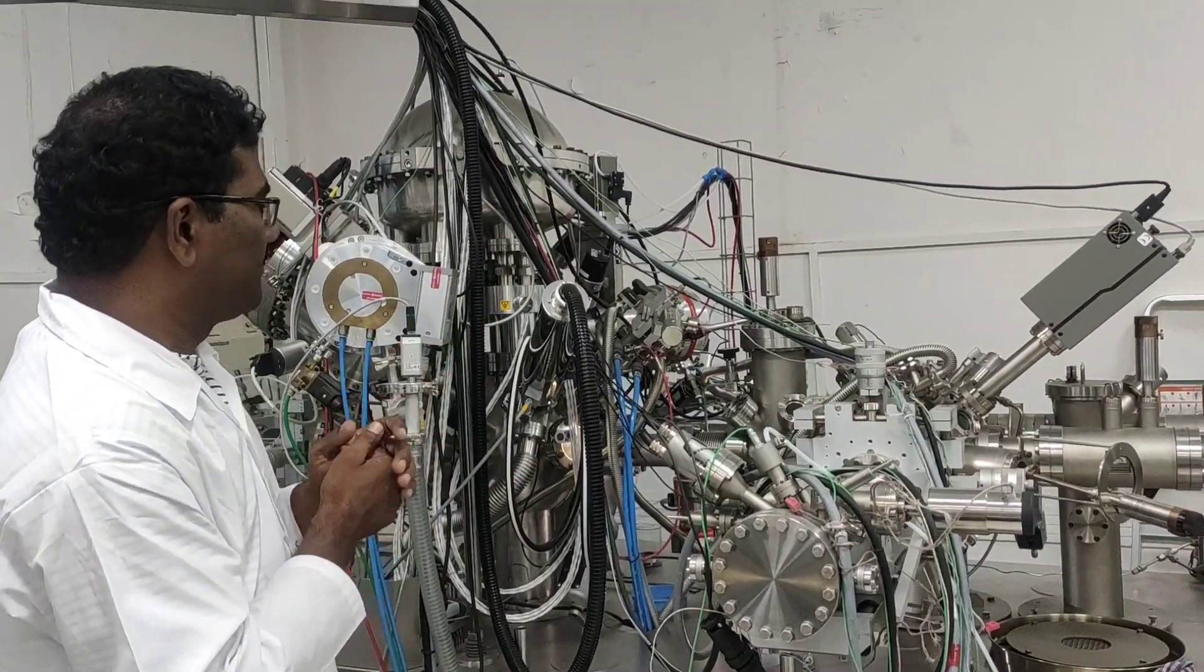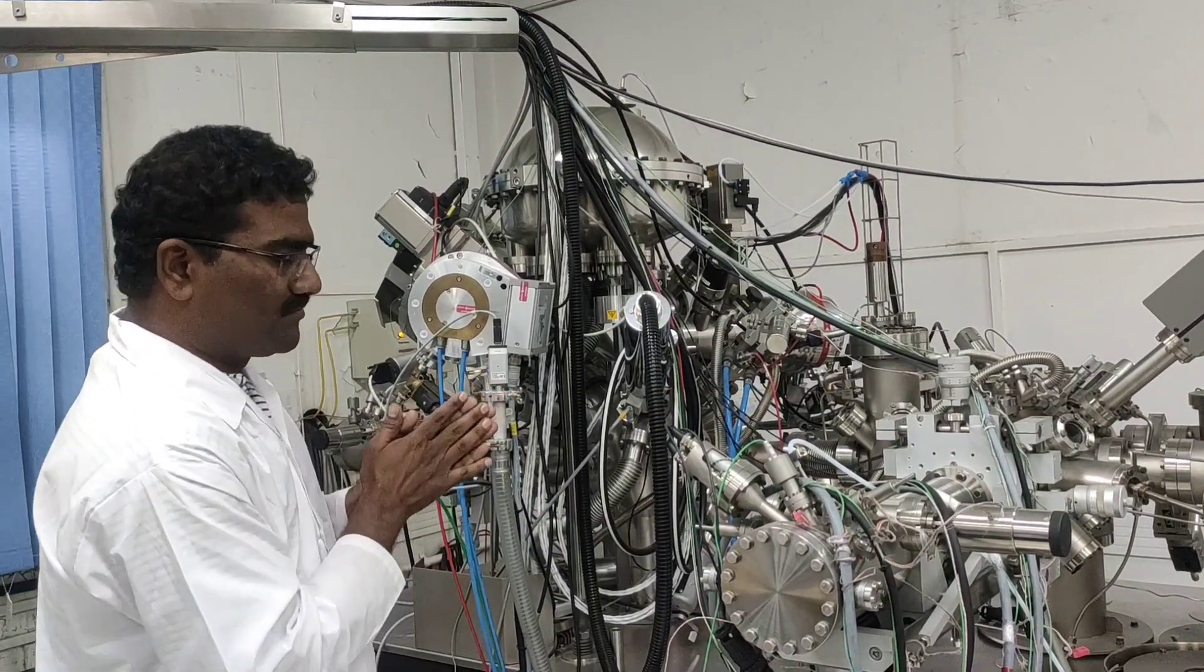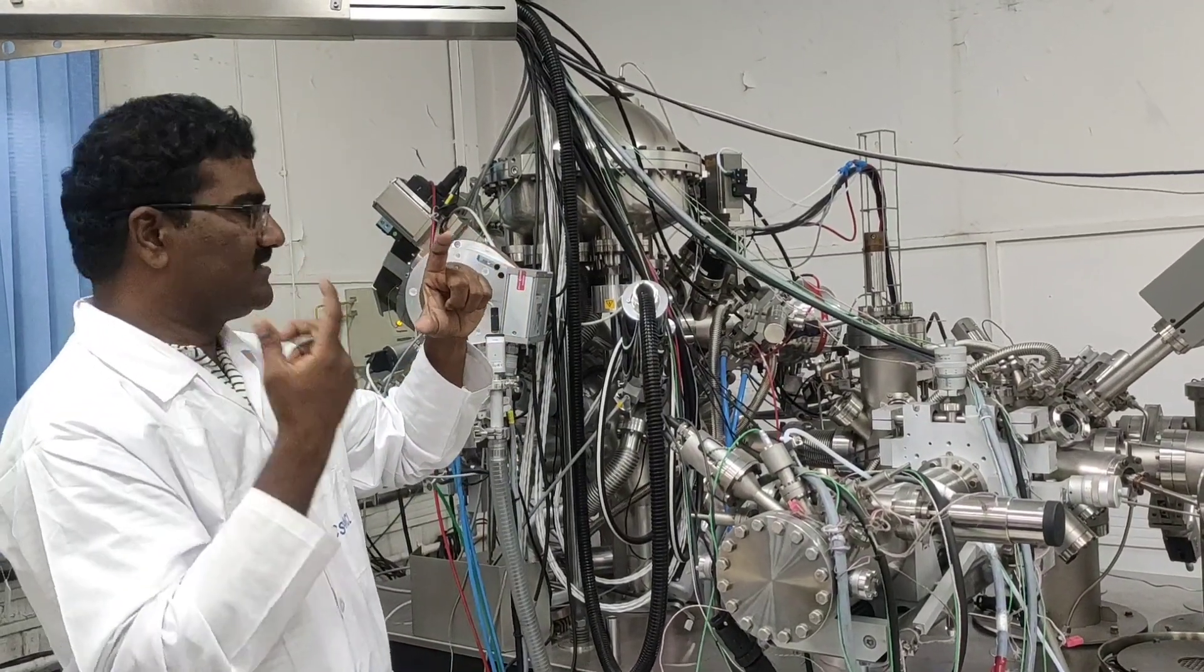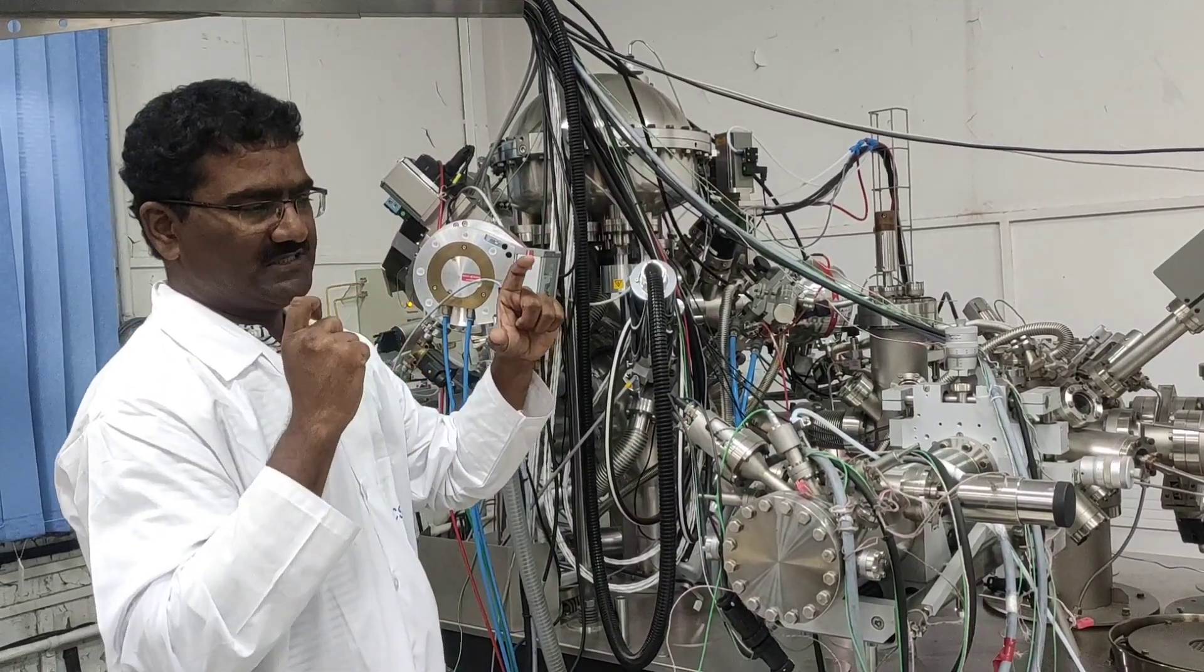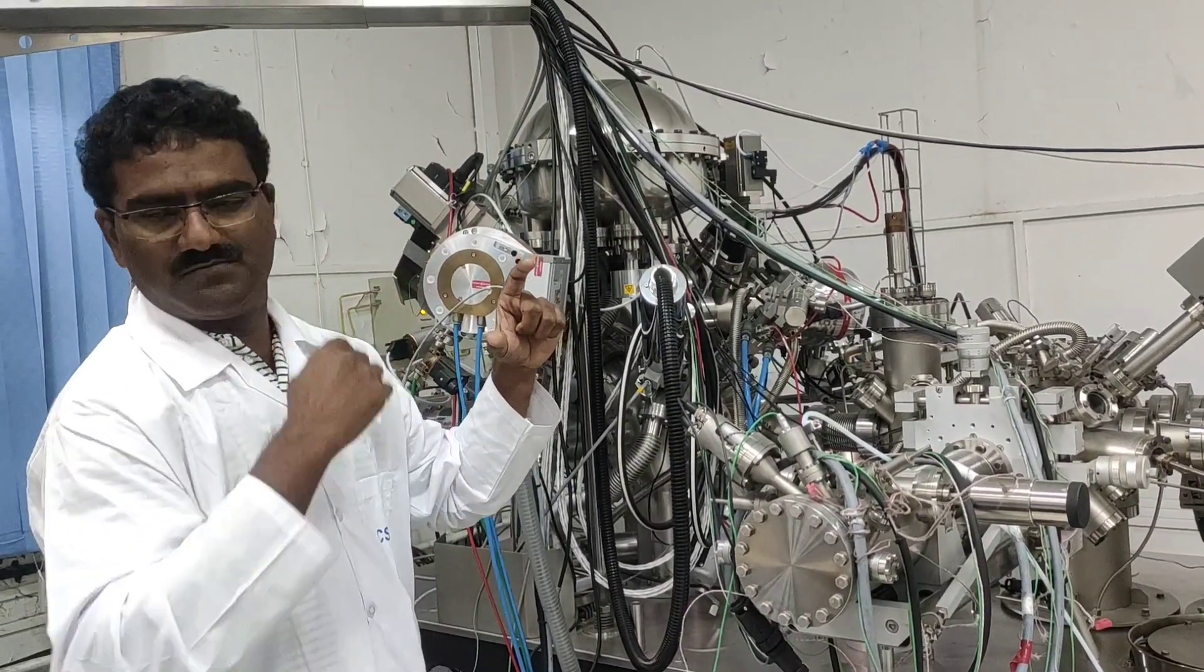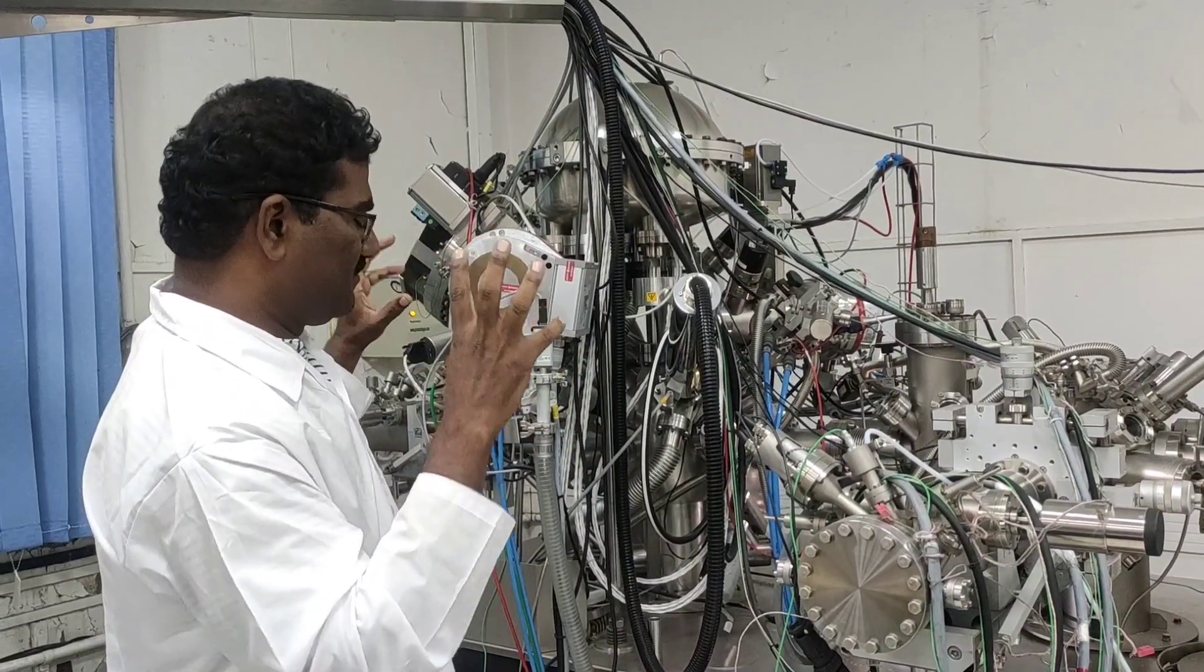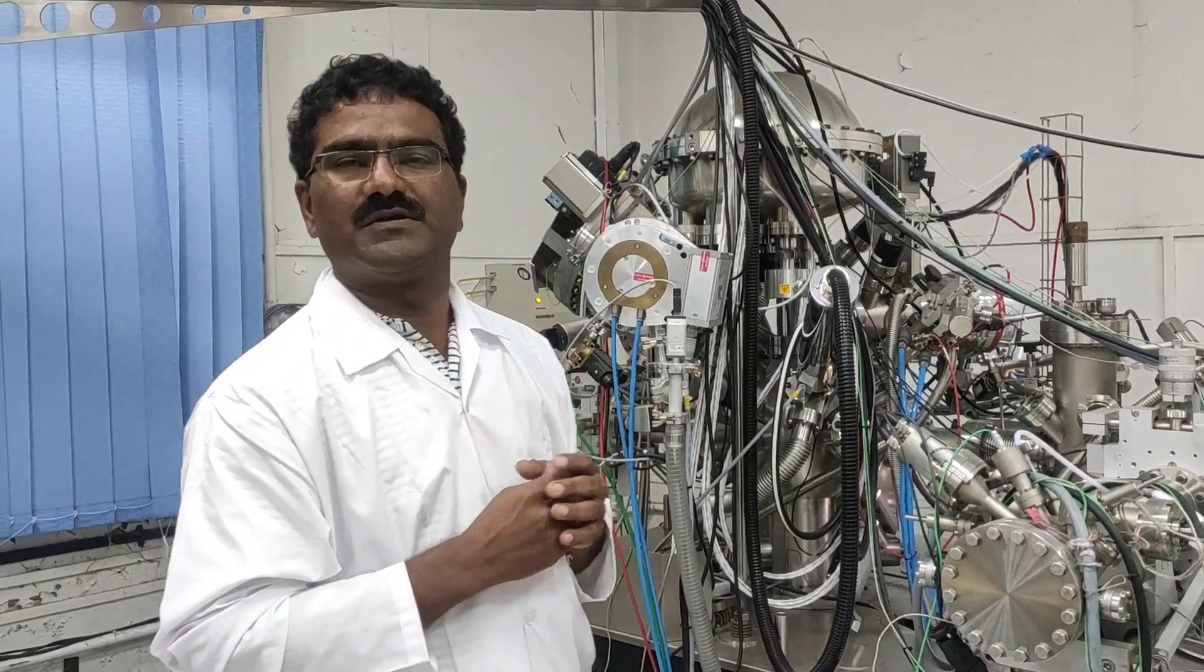Secondly, we have ultraviolet photoelectron spectroscopy. That technique also works in real-world catalysis. From ultraviolet photoelectron spectroscopy, you can find the band offset or bandgap of the material even in reaction conditions. From the reaction condition, ultraviolet photoelectron spectroscopy determines bandgap change or bandgap of the material or minima of the conduction band and maxima of the valence band. That is really important in photocatalysis and electrocatalysis to find the bandgap and band offset of the material. These are the really unique features of this instrument as you compare with other X-ray photoelectron spectroscopy or ultraviolet photoelectron spectroscopy.